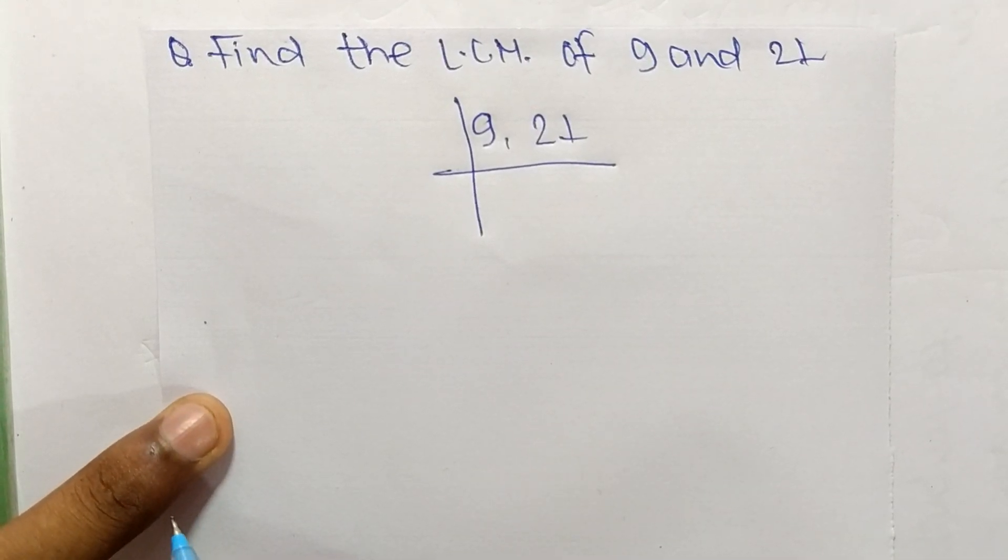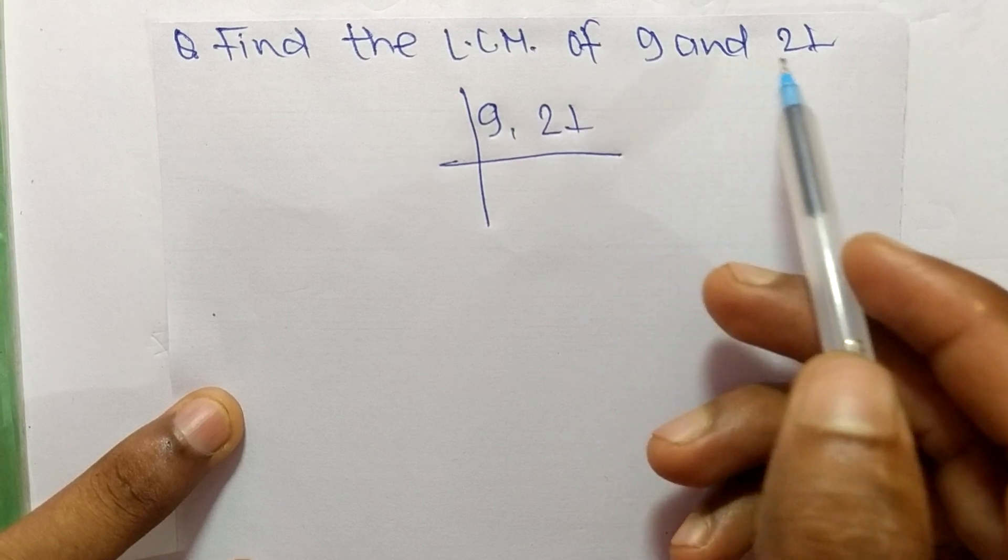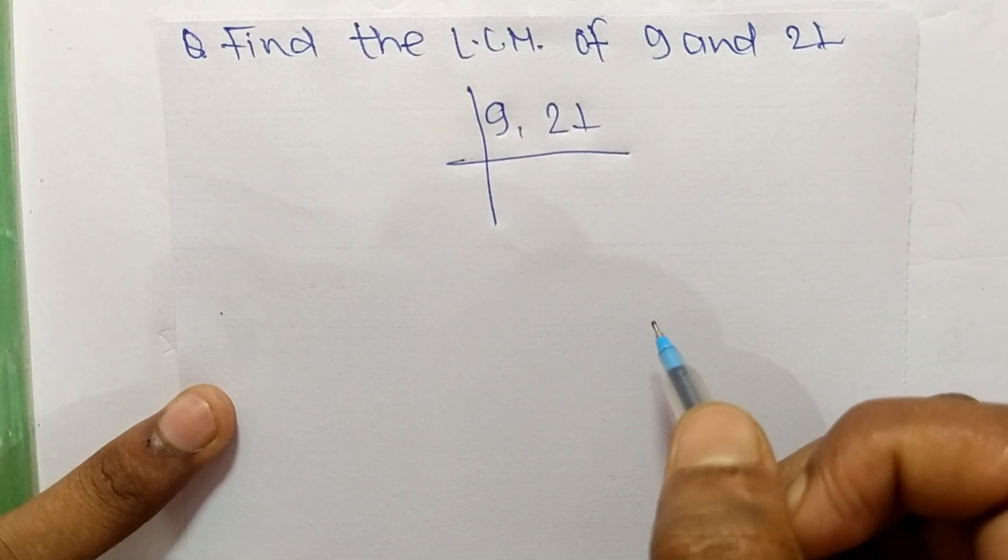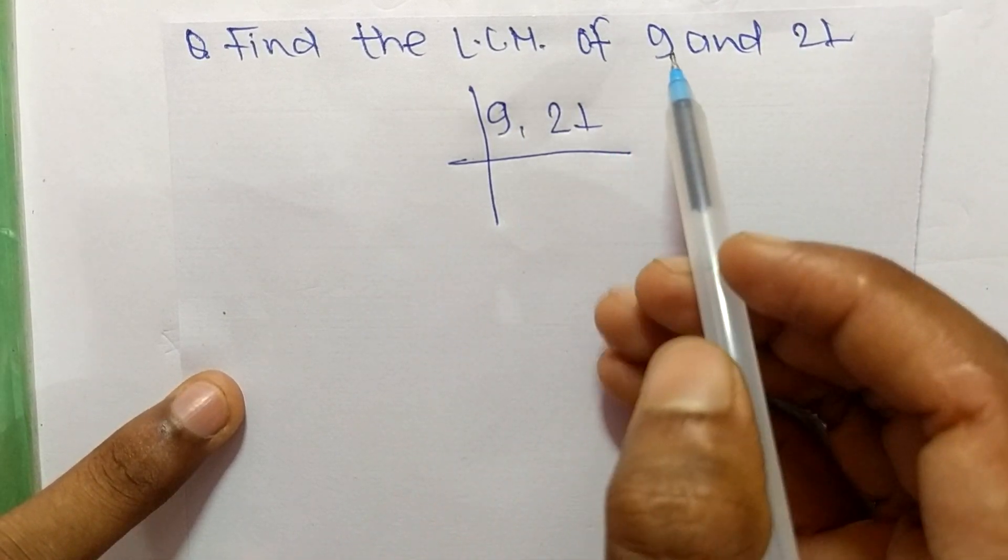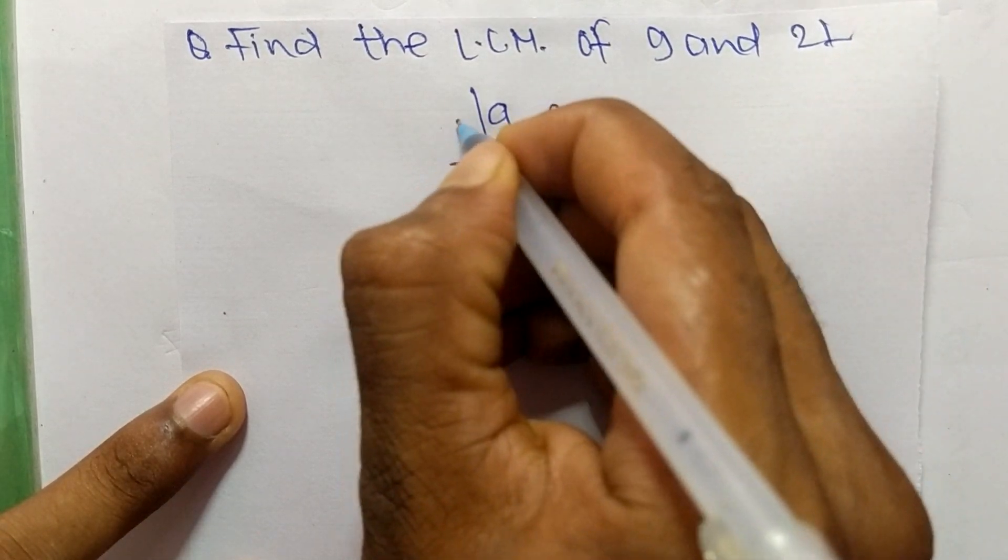So today in this video we shall learn to find the LCM of 9 and 21. To find LCM, first we have to choose the lowest number which can exactly divide 9 and 21.